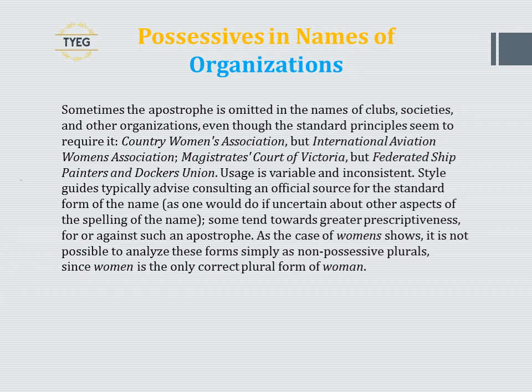Sometimes the apostrophe is omitted in the names of clubs, societies, and other organisations, even though standard principles seem to require it — e.g., 'Country Women's Association' but 'International Aviation Women's Association', 'Magistrates' Court of Victoria' but 'Federated Ship Painters and Dockers Union'. Usage is variable and inconsistent. Style guides typically advise consulting an official source for the standard form of the name. As the case of 'women's' shows, it is not possible to analyse these forms simply as non-possessive plurals, since 'women' is the only correct plural form of 'woman'.